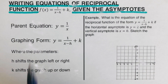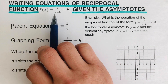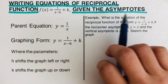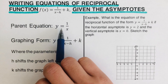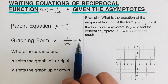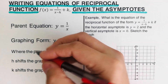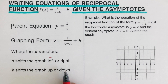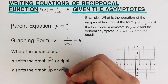In this video we will be writing equations and sketching the graph of reciprocal functions of the form f(x) = 1/(x - h) + k given the asymptotes. The parent equation is y = 1/x, and in the graphing form y = 1/(x - h) + k, the parameter h shifts the graph left if negative and right if positive, while k shifts the graph up if positive and down if negative.